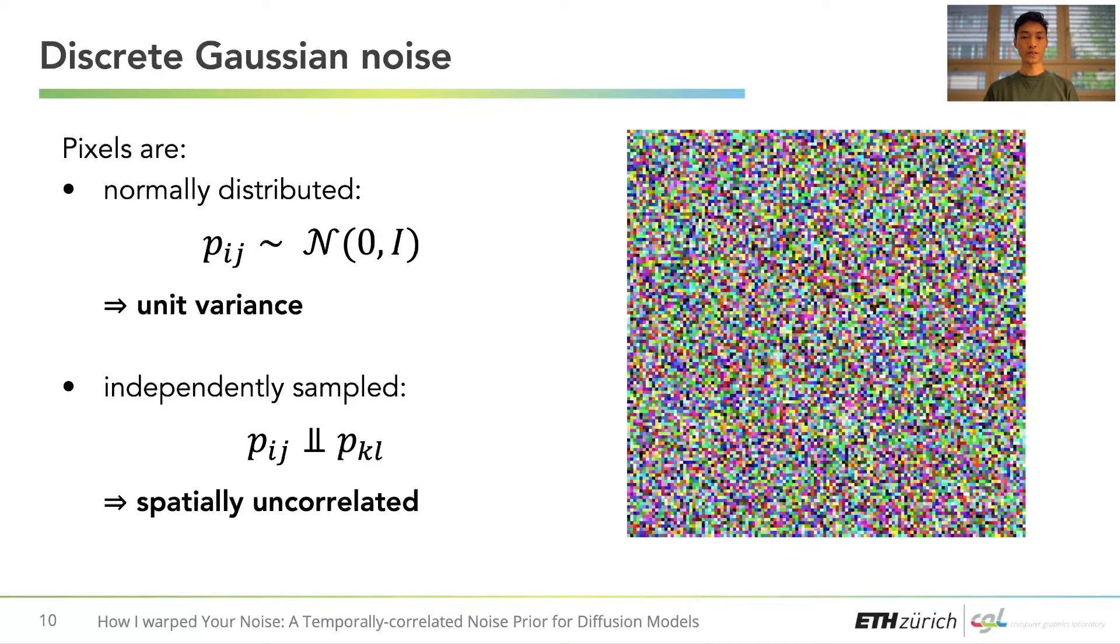While the idea is simple, warping a Gaussian noise presents some challenges. A discrete Gaussian noise sample is an image, such that pixels are normally distributed with unit variance and independently sampled, meaning that image pixels are spatially uncorrelated.